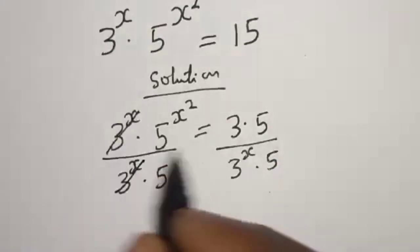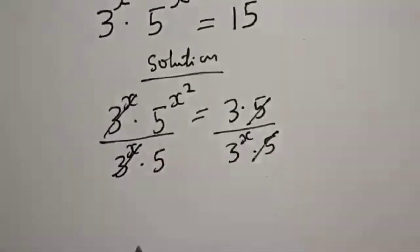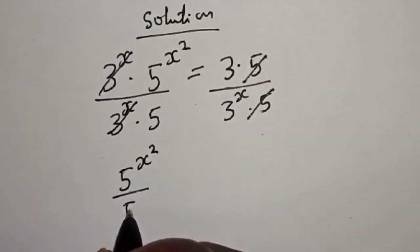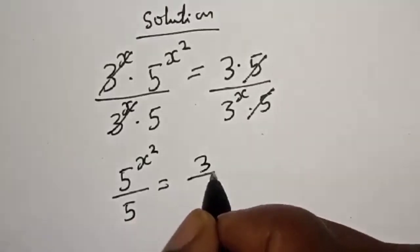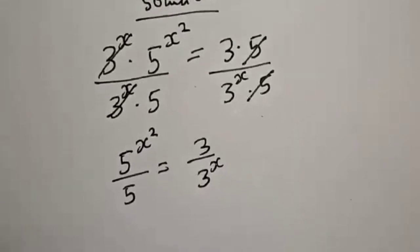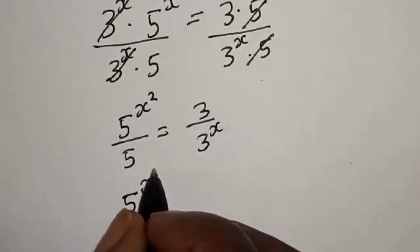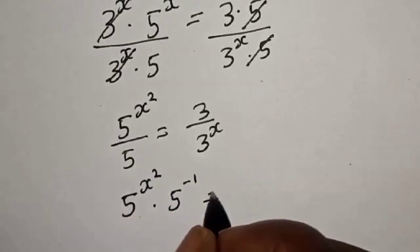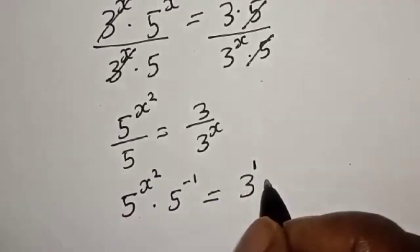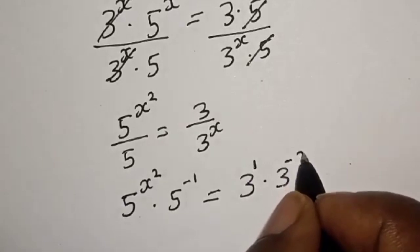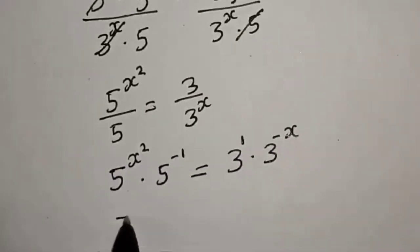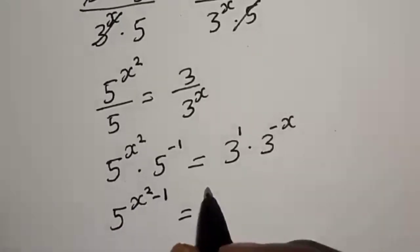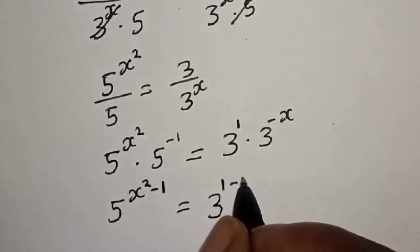This one will cancel this, and this one will cancel this. So we get 5 raised to power s squared divided by 5 is equal to 3 divided by 3 raised to power s. This becomes 5 raised to power s squared times 5 raised to power minus 1, equal to 3 raised to power 1 times 3 raised to power minus s. Therefore, 5 raised to power (s squared minus 1) is equal to 3 raised to power (1 minus s).